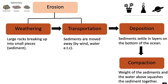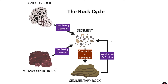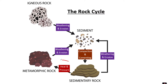Compaction is the weight of the sediments and the water above squashing the sediment together, and cementation is the layers of sediments sticking together to form sedimentary rock. So far this part of the rock cycle is all about how rocks break down into sediment and form sedimentary rock, but rocks form part of a cycle — they might not stay as sedimentary rock forever, because under conditions of heat and pressure sedimentary rock can turn into metamorphic rock.